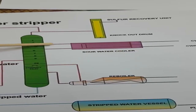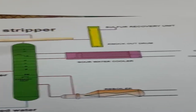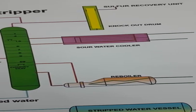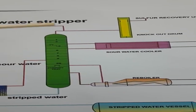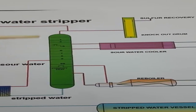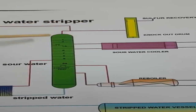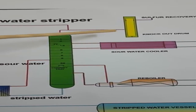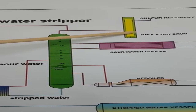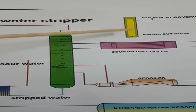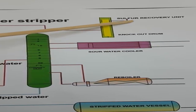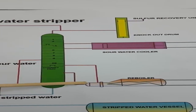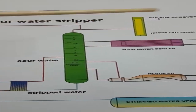The function of the knockout drum is to remove liquid droplets entrained in the hydrogen sulfide gas coming from the stripper. When gas from the stripper travels to the knockout drum, it carries some liquid or entrained vapor-liquid. In the knockout drum, when the gas flashes in, the liquid is removed, and the hydrogen sulfide gas — now free from liquid — goes to the sulfur recovery unit. The liquid collected in the knockout drum is recycled back to the stripper or into the strip water vessel.